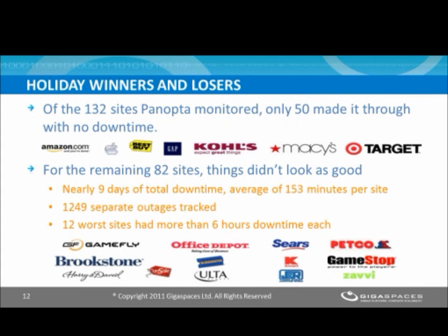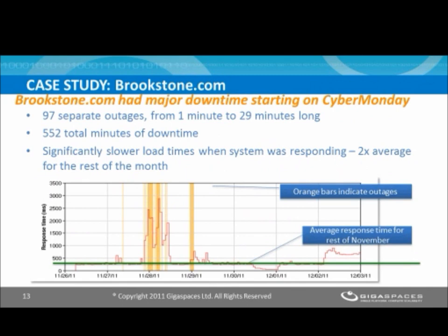Let's drill into one of these sites more closely. Brookstone had most of the season relatively well, but they had substantial downtime starting on Cyber Monday. Over a period of about 14 hours, we tracked 97 separate outages ranging anywhere from a single minute to the longest of about 29 minutes. Over that period they had 552 total minutes of downtime — roughly at least a quarter of the time during that period their site was actually down.